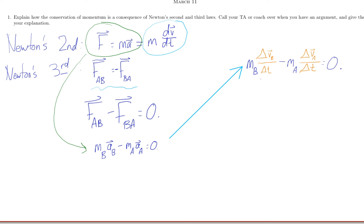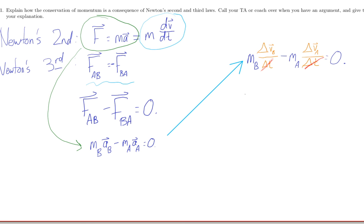I can cancel the changes in time by multiplying through by that. And that just gives me that MB delta VB minus MA delta VA is zero. But mass times velocity is just momentum. So the change in momentum of B plus the change in momentum of A always adds to zero.